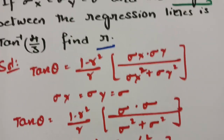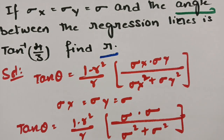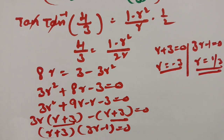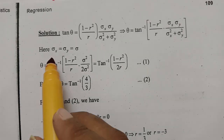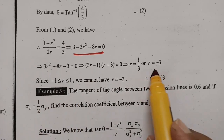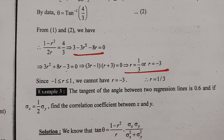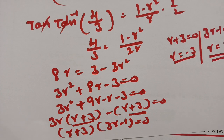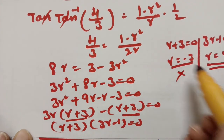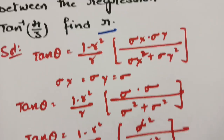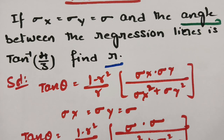We need to find r. Since r must lie between −1 and +1, r = −3 is not valid. Therefore r = 1/3. So sigma x = sigma y = sigma, theta = tan⁻¹(4/3), and after substituting and solving we get r = 1/3. The angle between the two regression lines and problems based on it are very important.